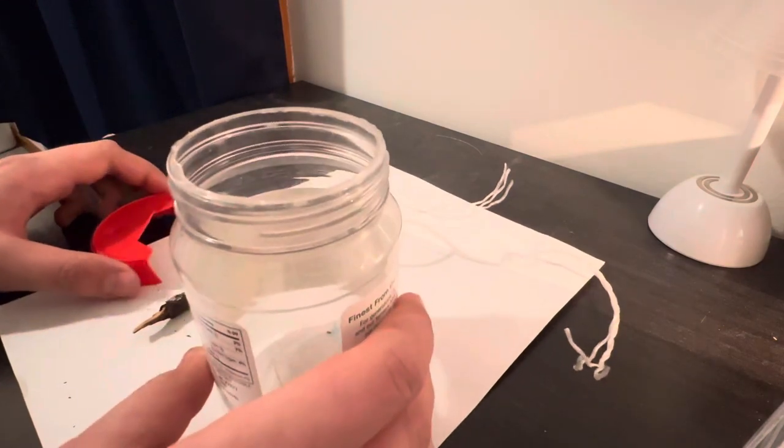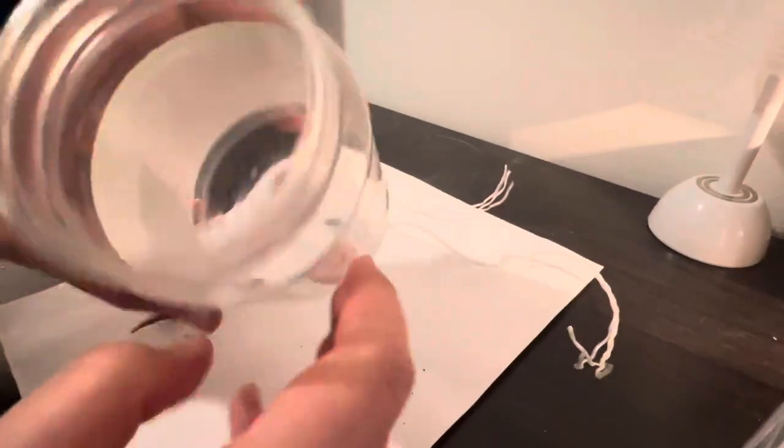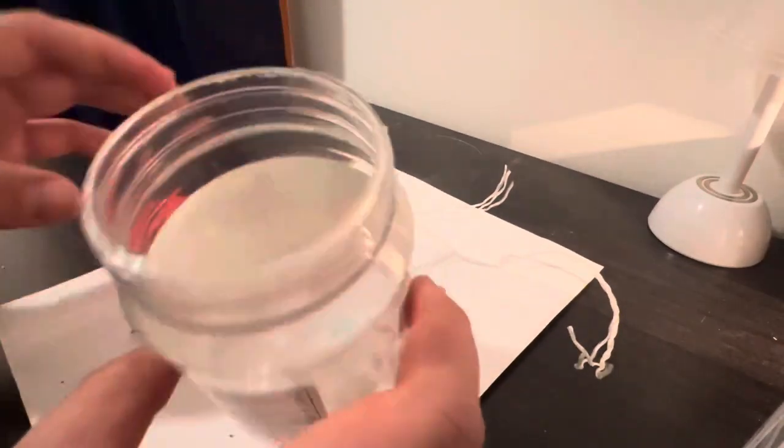Okay, so first thing, what you're going to do is take your jar, clean all the peanut butter out as you can. So you can see, mine's nice and clean. Just use soap and water and rinse it out good.